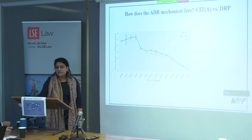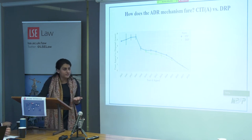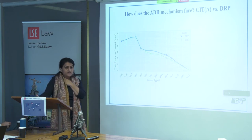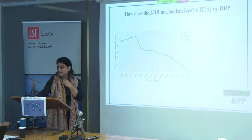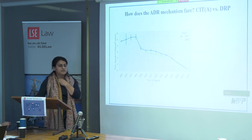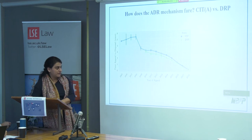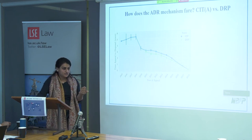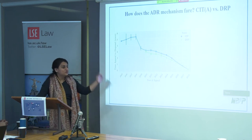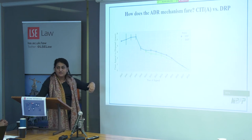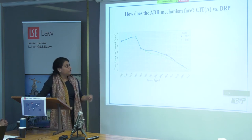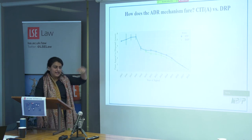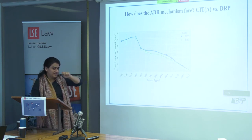Many taxpayers do not prefer the DRP because it is composed of three commissioners of income tax who may take decisions adverse to the assessee. They would rather go through the entire CITA process and try their luck. With expansion of the CIT appeals, people continue going through that channel and the duration has been declining, which may explain the closing of the gap.